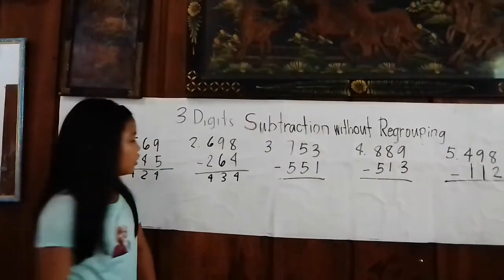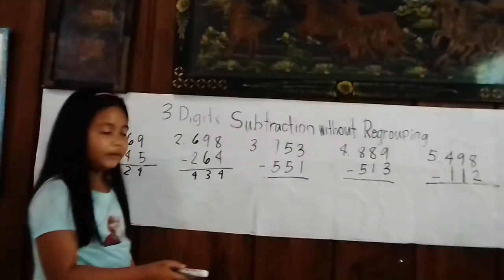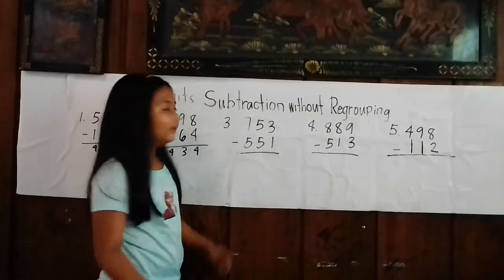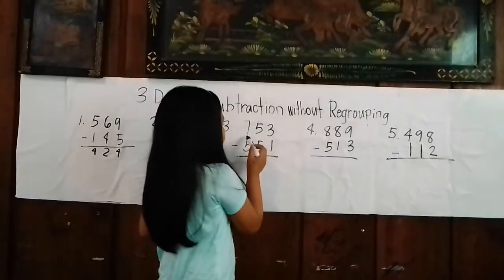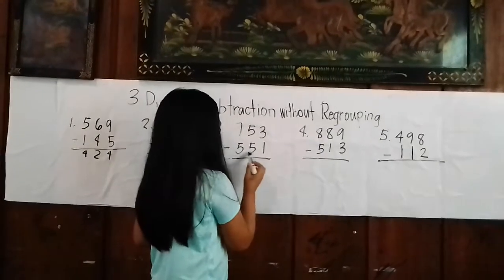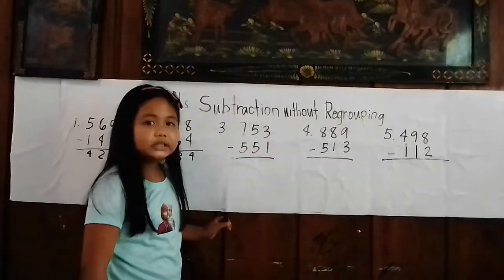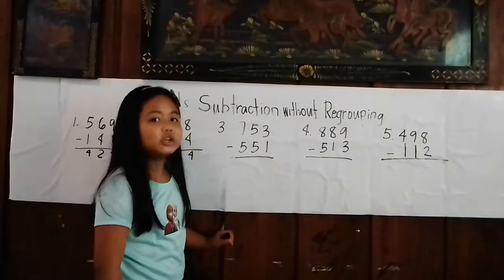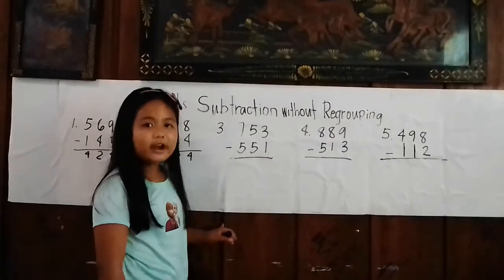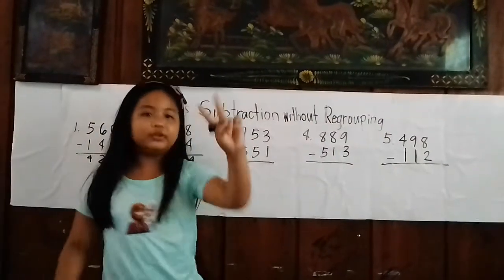Number 3: Let's subtract again. 753 minus 351. First, we subtract the ones place. 3 minus 1 equals 2.